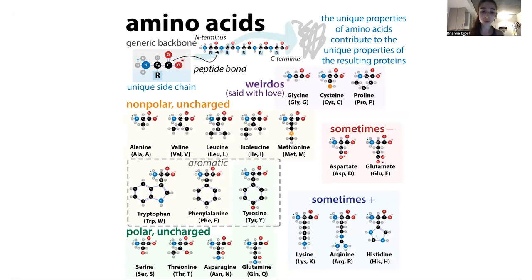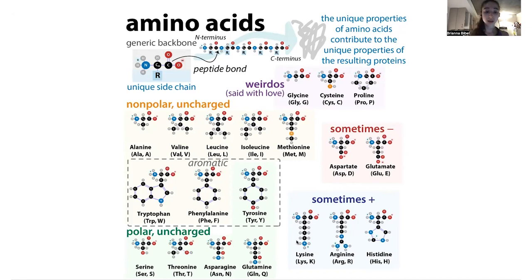Know the structurally unusual ones: glycine is very small (just a hydrogen side chain) and flexible — the 'loosey-goosey' one. Proline has a restricted range of motion because it folds back on itself, limiting backbone rotation and affecting secondary structure. Changing a glycine to a proline can lock the protein structure in place. This is used in recombinant spike protein constructs with proline substitutions to stabilize a particular state for vaccines and structural studies. Remember the three-letter codes, the one-letter codes, and be able to connect names to properties.